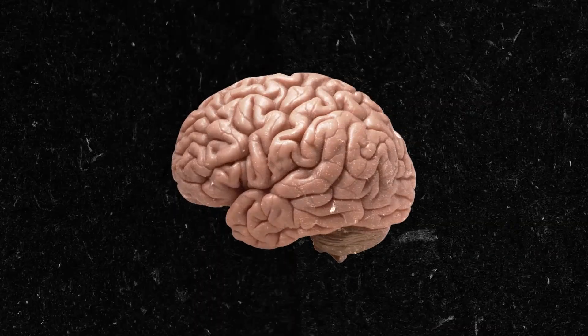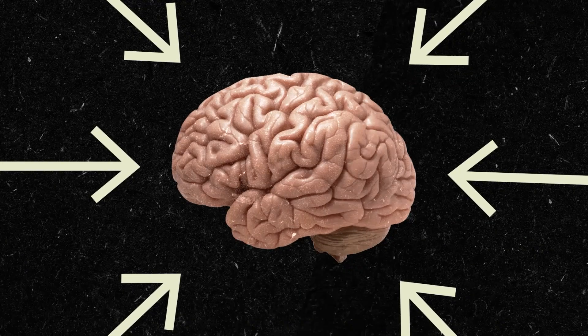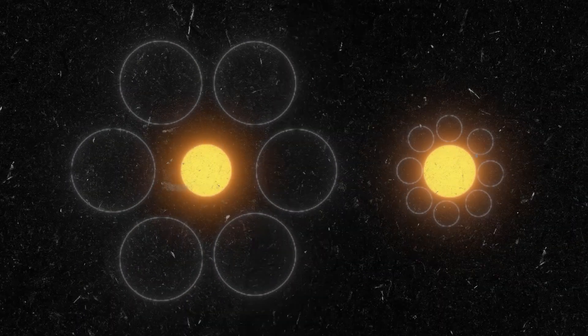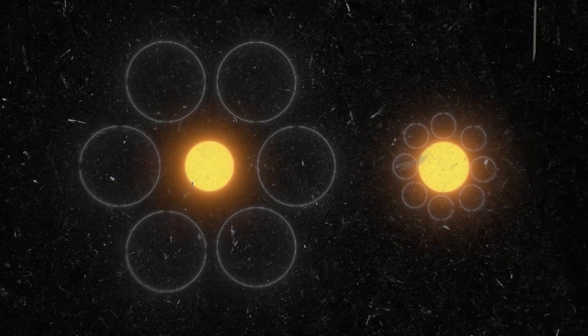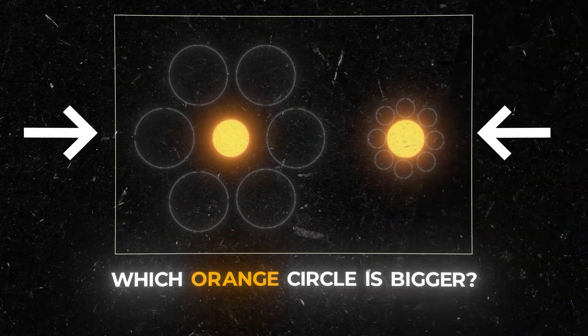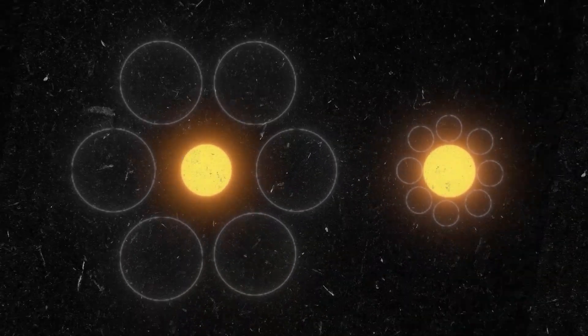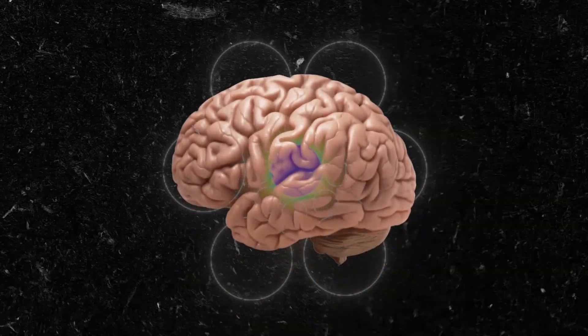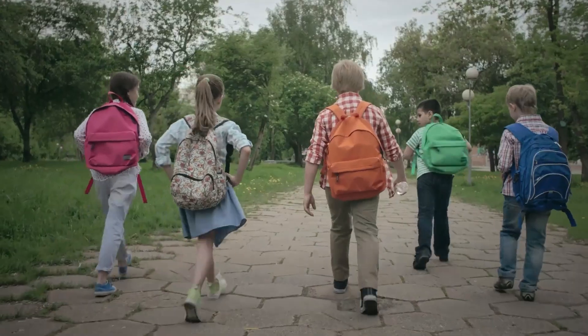This line of thinking also impacts how our brains interpret optical illusions. Take this one with two orange circles, for example. Which orange circle is bigger? The one on the left or the one on the right? If you've seen this before, you might already know that they're the same size, but your brain just can't believe it. You probably grew up